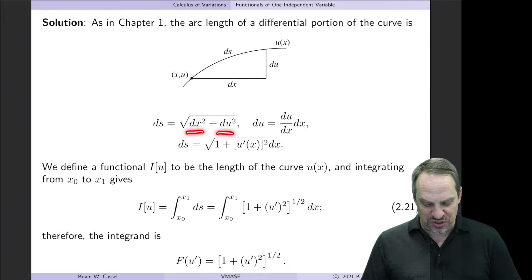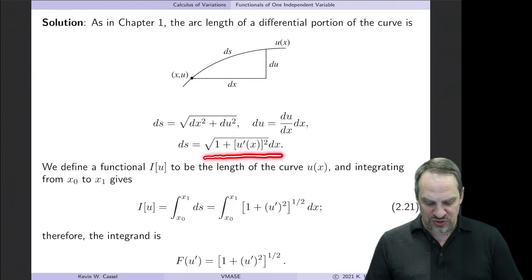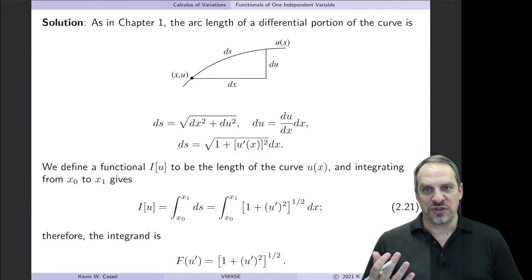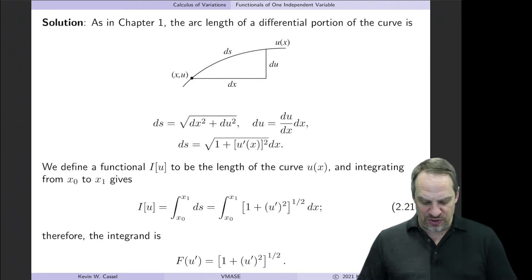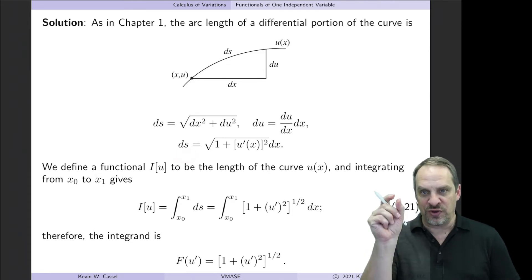So ds squared is just dx squared plus du squared, and we can solve for ds as the square root of the sum of the squares of the two components. We also know that du, because u is only a function of x, is du/dx times dx. So I can substitute that in for du, and I have a dx squared here as well. I can factor those out of the square root, and I have the square root of 1 plus u prime squared all times dx. This is just an expression for the differential arc length ds in terms of our independent variable x and the path u(x).